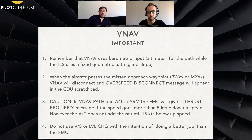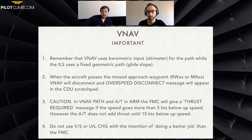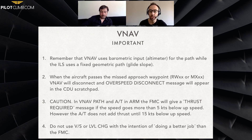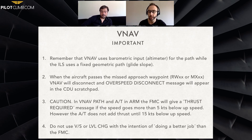When the aircraft passes the missed approach waypoint, VNAV will disconnect and an overspeed disconnect message will appear in the CDU scratch pad. The caution is the VNAV path: the autothrottle in our FMC will give us a 'thrust required' message if the speed goes more than five knots below up speed. However, the autothrottle does not add thrust until 15 knots below up speed — that's for the 737. It's basically the opposite of the 'drag required' message — it knows you need some thrust, so it's going to ask you to add thrust.